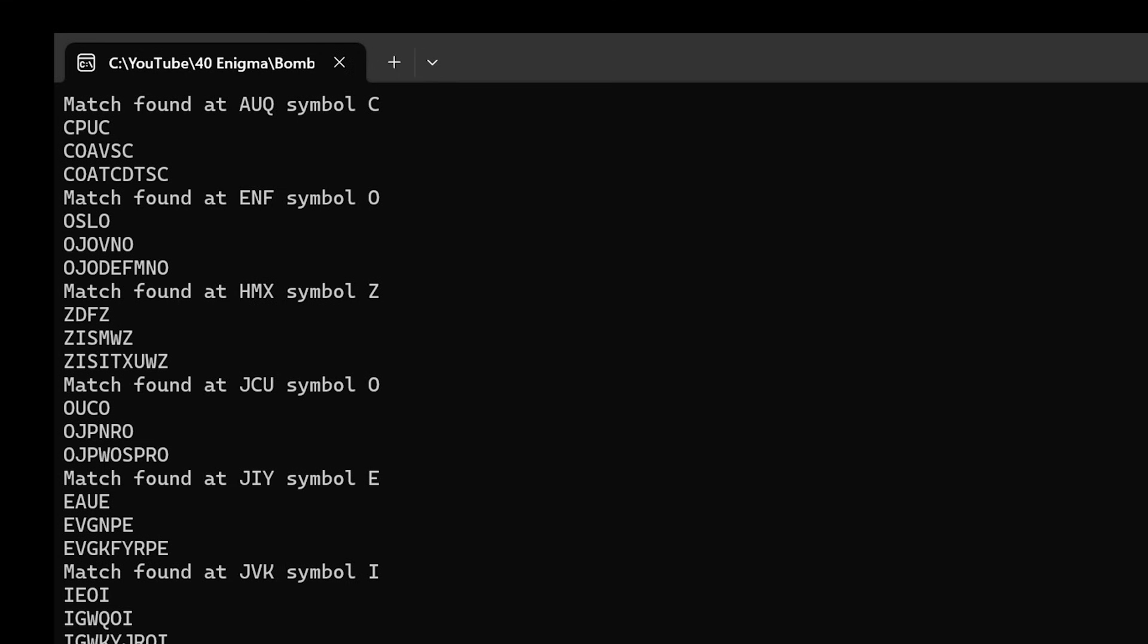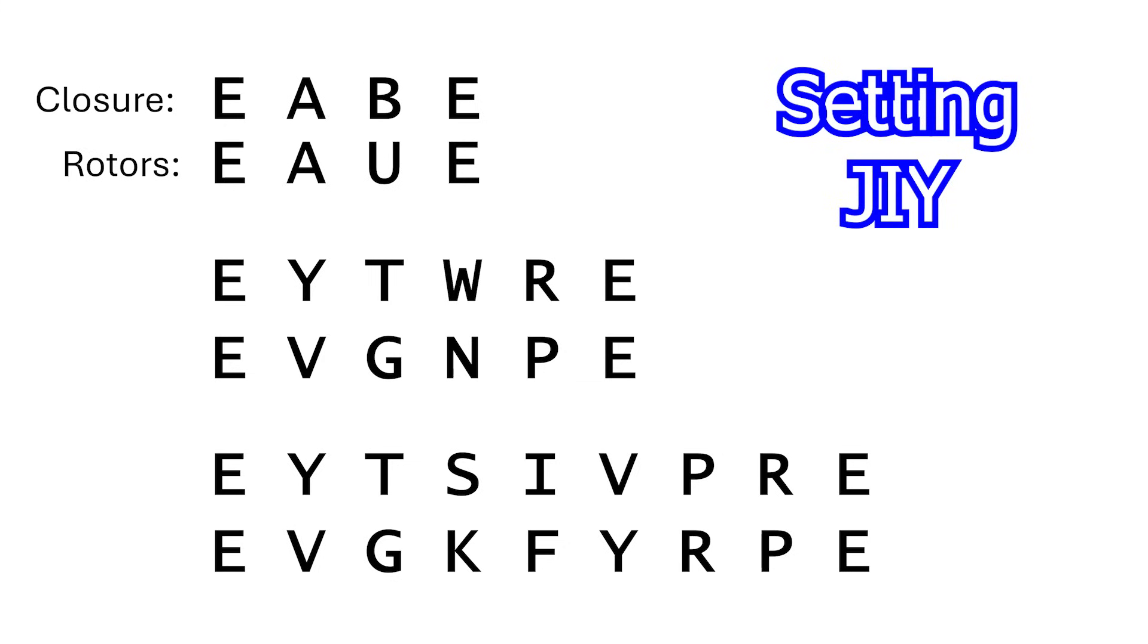Now let's have a look at the correct answer with rotor settings of J, I, Y and E maps to E. At the rotors, this generates E-A-U-E, E-V-G-N-P-E, E-V-G-K-F-Y-R-P-E.